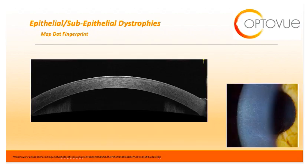Let's look at a few of the epithelial and subepithelial dystrophies. The first is MAPDOT. MAPDOT can take on multiple appearances, including diffuse gray patches or maps, large or tiny cysts or dots, or fine refractile lines or fingerprints. Each of these findings will be localized to the corneal epithelium or subepithelial space. On OCT, you can see the irregular findings in the subepithelial tissue, with hypo-reflective areas correlating to a cystic form of MAPDOT.